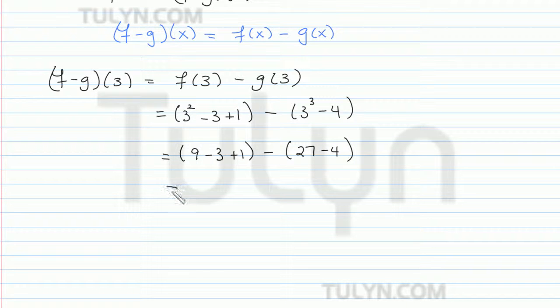And then with PEMDAS, we do the parentheses first. So 9 minus 3 is 6 plus 1 is 7, minus 27 minus 4 is 23.